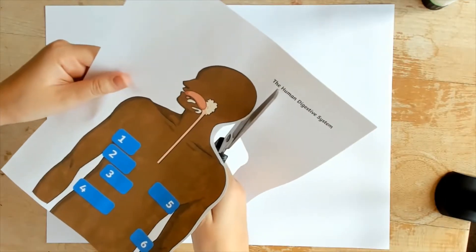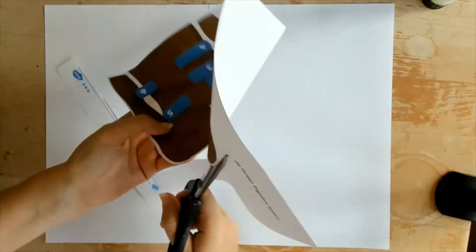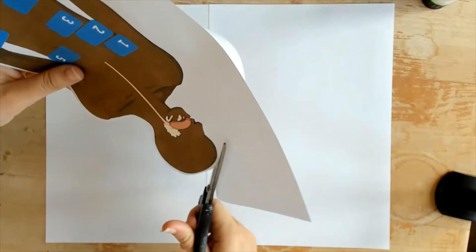This would make a great follow-up or summary activity after a block of year four learning about the digestive system. There are four steps.